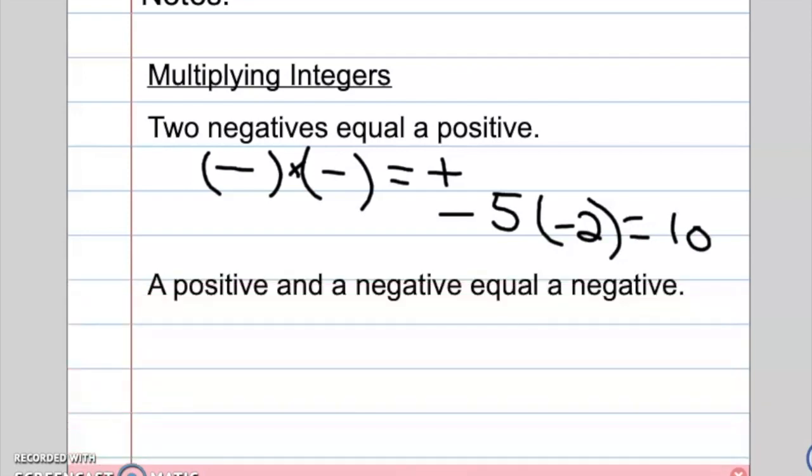Now, if we have a positive and a negative, and we multiply them, it's always going to equal a negative. So a positive times a negative will equal a negative. If you have one negative and one positive, it's always going to be negative.